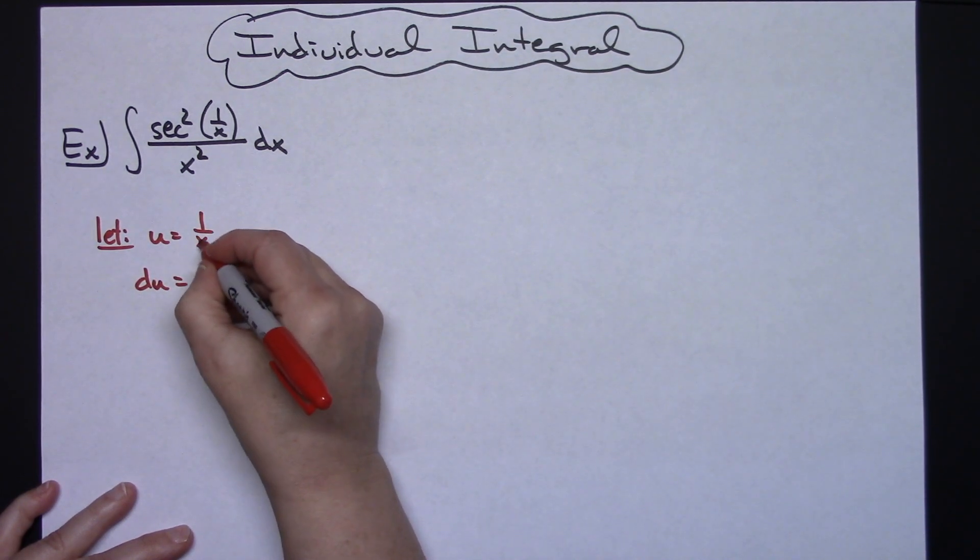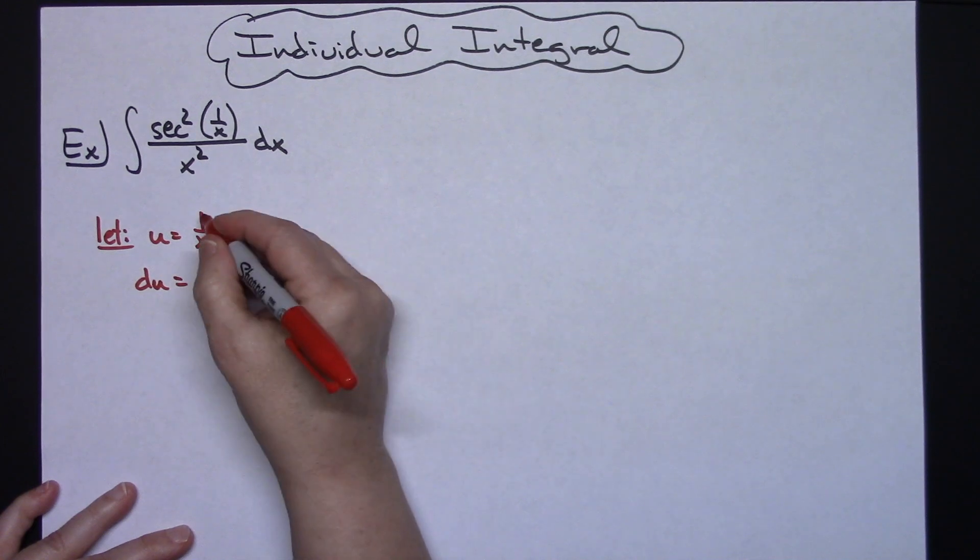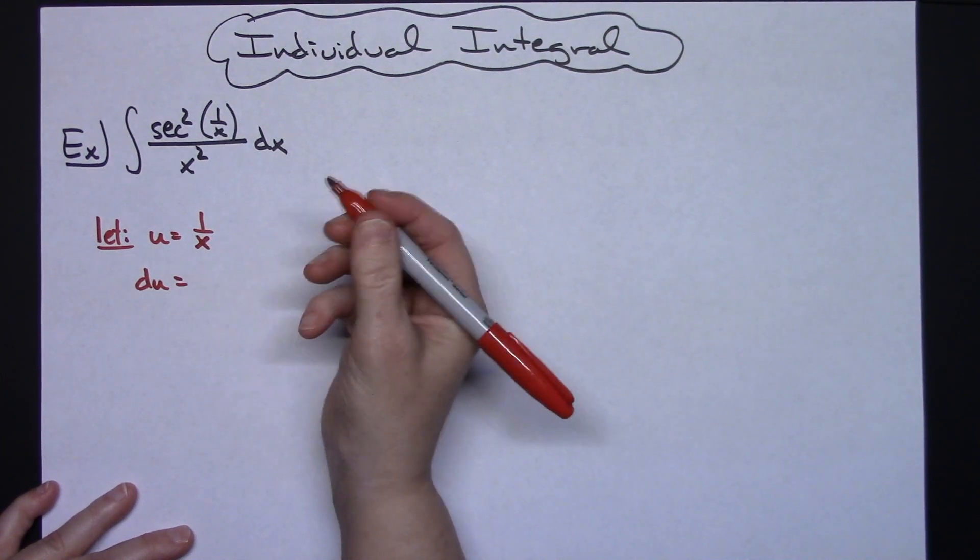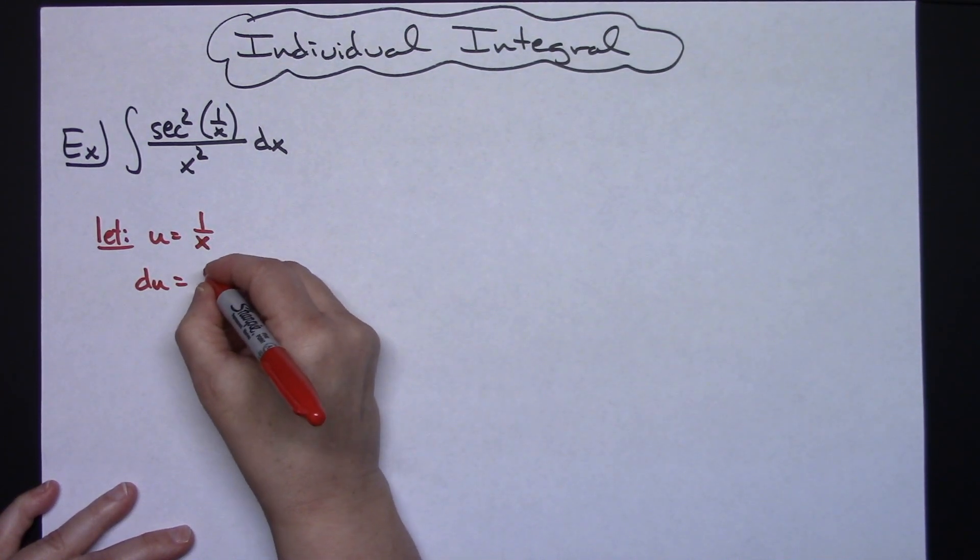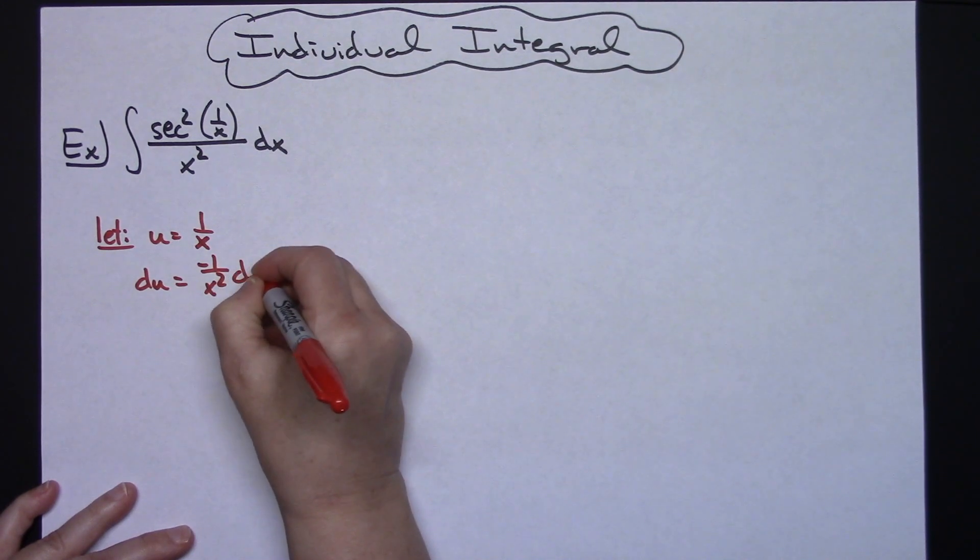if you need to pause the video to calculate that derivative because it might take you a little bit of time, then go ahead and do that. Otherwise, I'll just go ahead and give you that. It's a negative 1 over x squared dx.